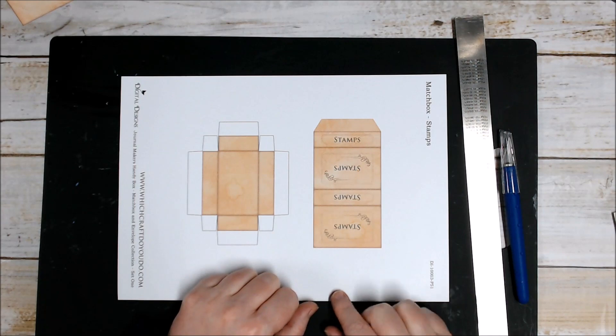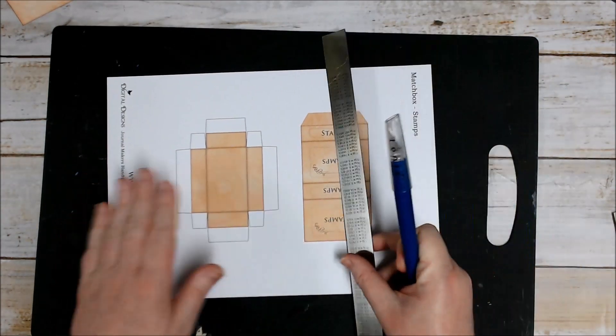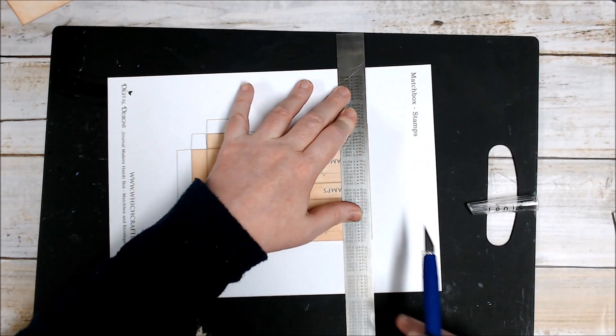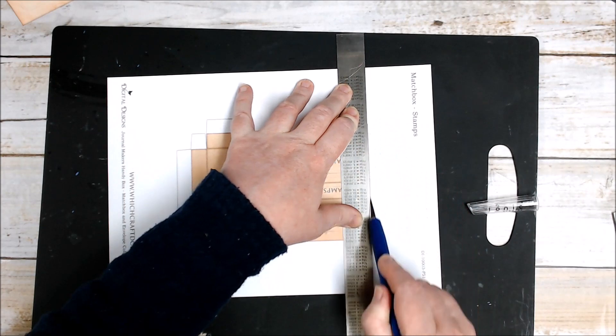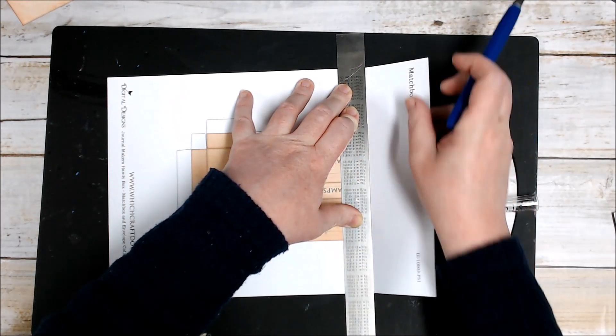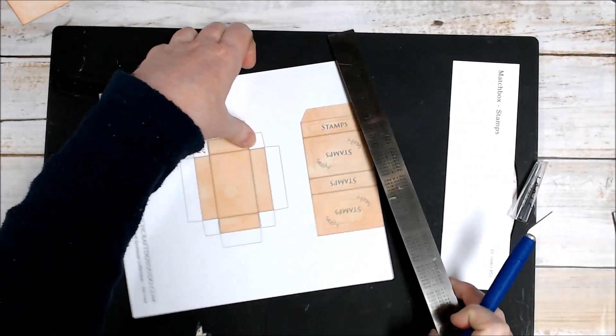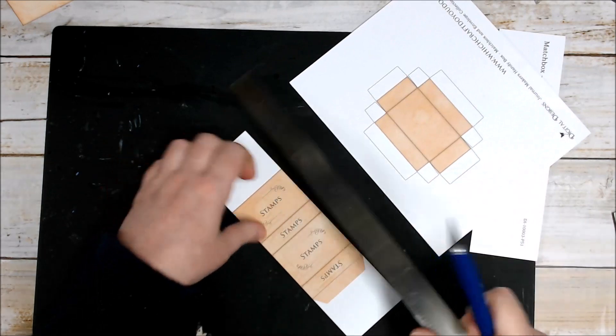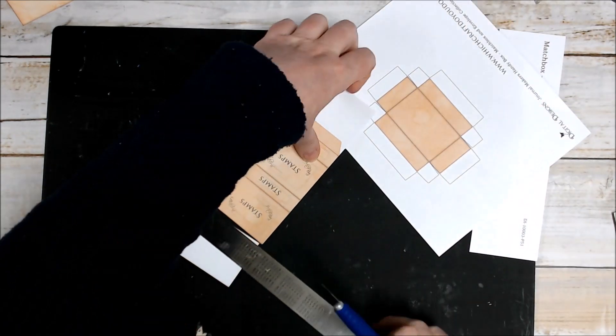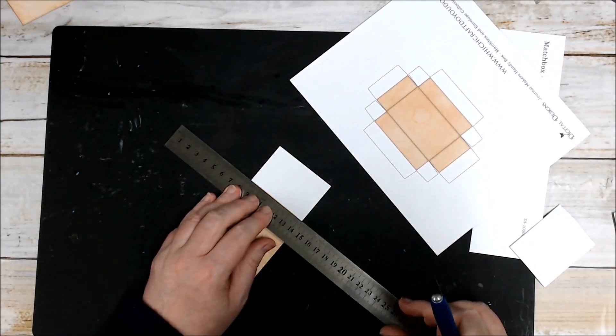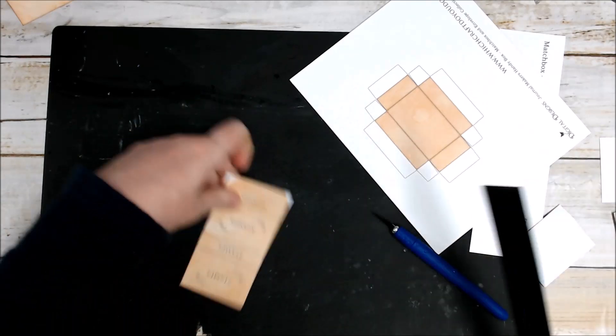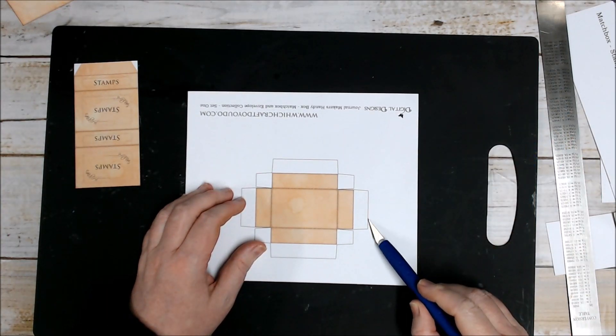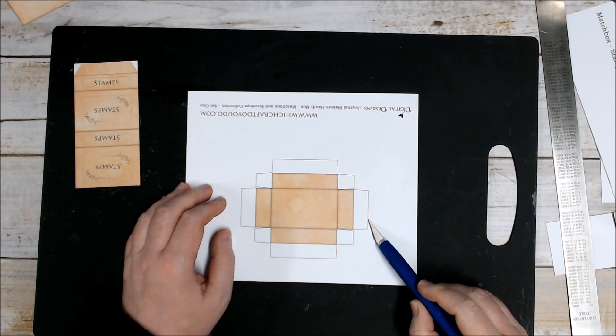So I'm going to cut out my matchbox now. I'm going to use a craft knife and a metal ruler, and I'm just going to run the craft knife just inside the edge of the colored section of the matchbox. I'm going to cut just inside the black line so that the black line doesn't show when I finish cutting everything out.